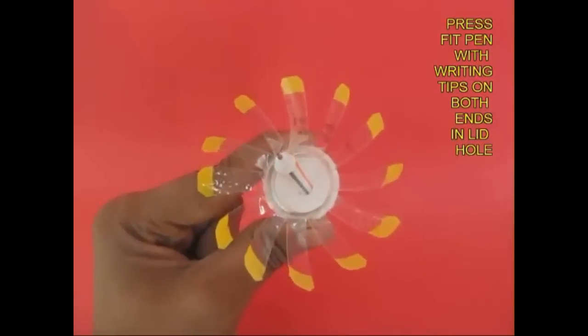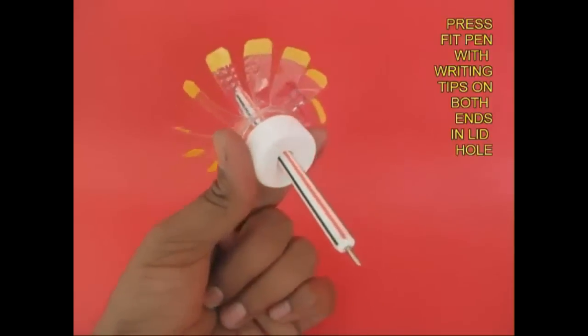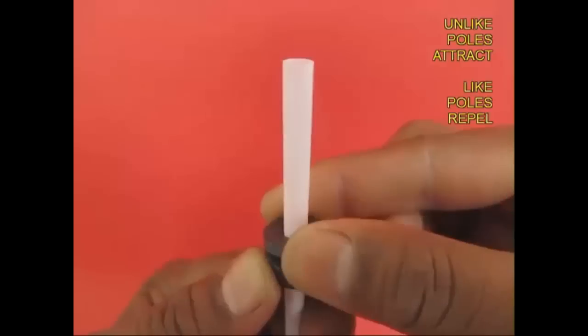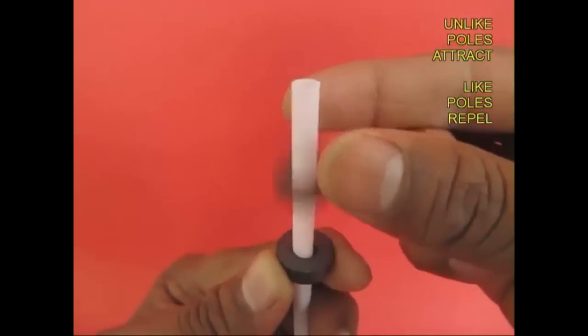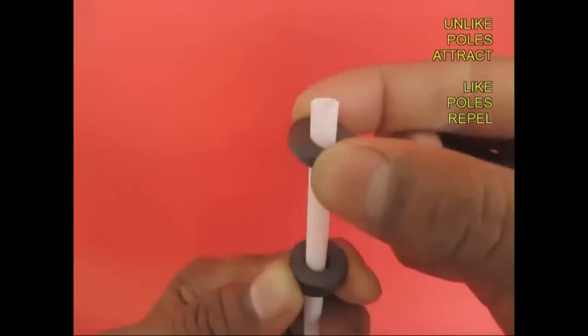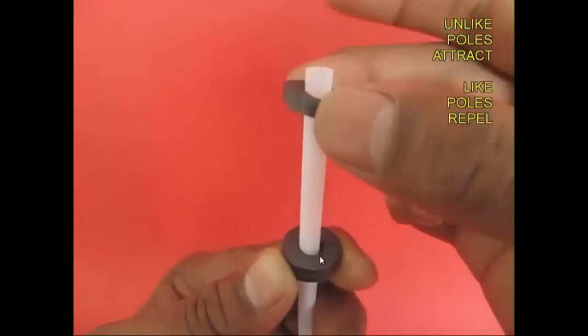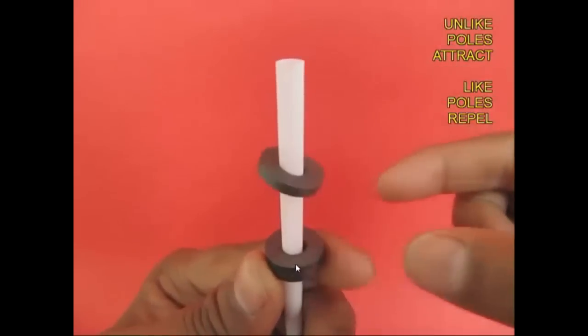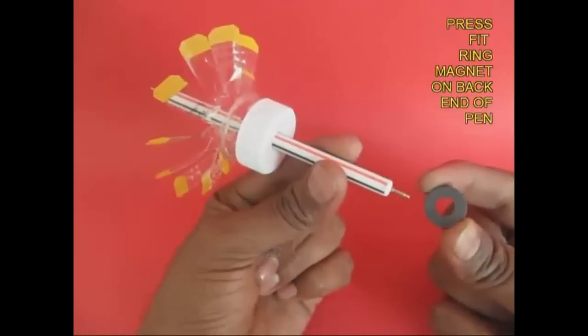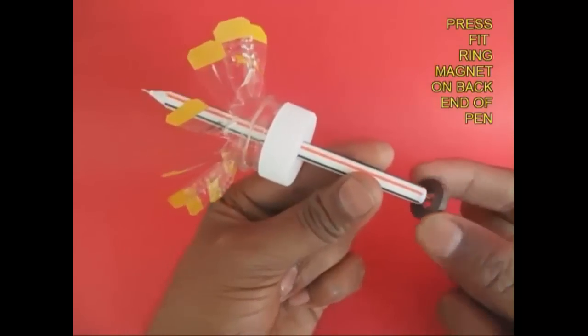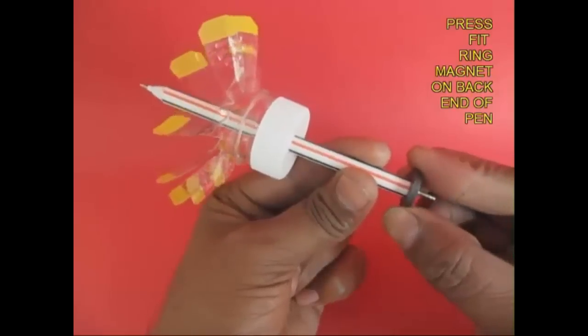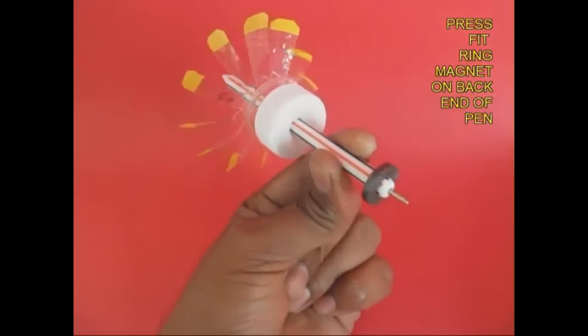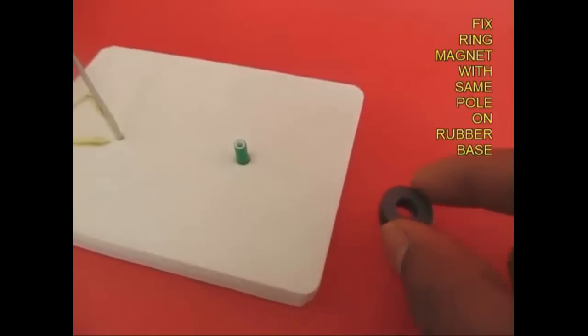Since the pen has writing tips on both sides, it doesn't matter which side you put it. Now take these three ring magnets and place them so that they are repelling each other. These two ring magnets are of opposite polarity so they are attracting, and the other one is repelling. Again, put one of the ring magnets at the back end of the pen, very close to the writing tip.